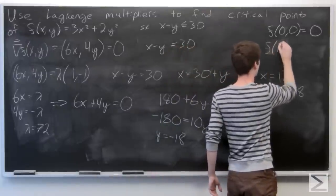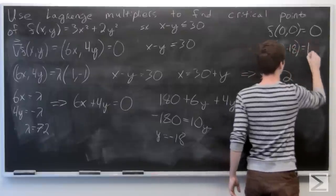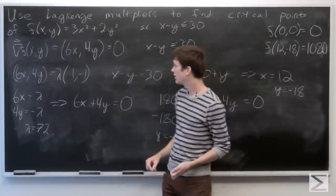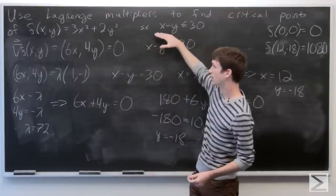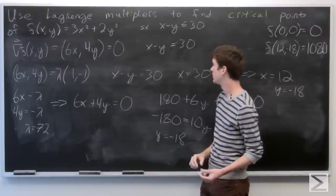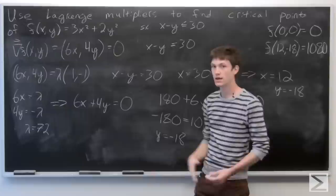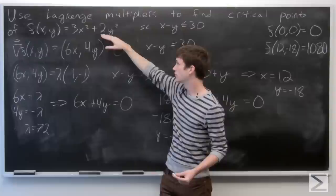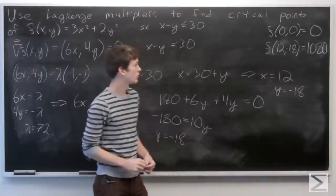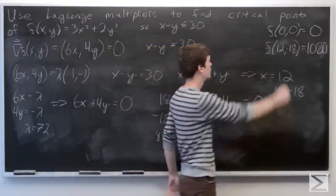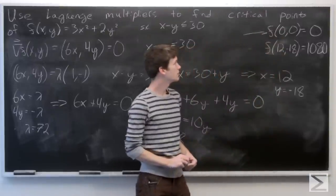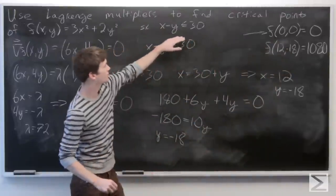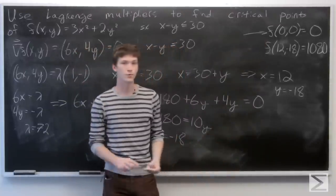So we have f of (12, negative 18) is 1080. If we look at our constraint x minus y is less than or equal to 30, we could let x equal 0 and y be as arbitrarily large as we want, which means f of x, y could be arbitrarily large since our y value is squared. So that means we're looking for a minimum. Our minimum occurs at f of (0, 0). We found critical points both on the boundary and in the interior, and even though our constraint is not a compact region, we can deduce that we have a global minimum at (0, 0).